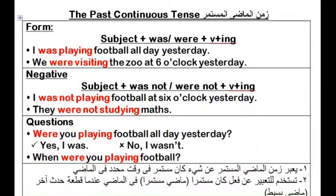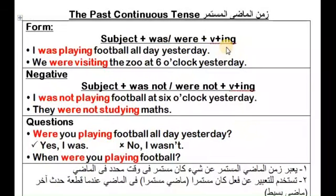The past continuous tense — زمن الماضي المستمر. يتكون الماضي المستمر من Was/Were + Verb + ING. فاعل + Was/Were + فعل مضافاً له ING. I/He/She/It + Was. We/They/You + Were + ING.